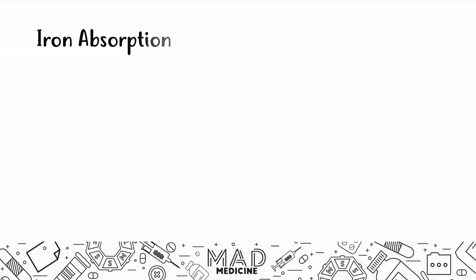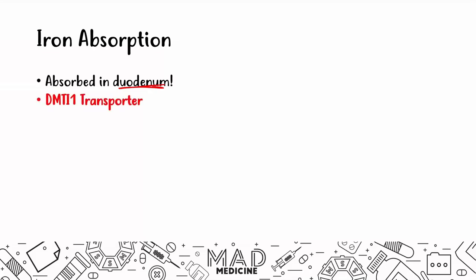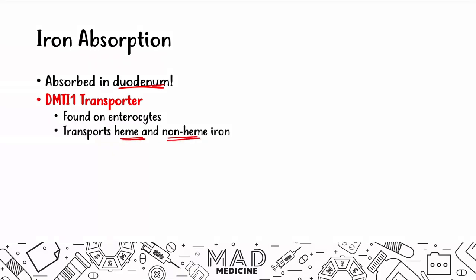Iron is absorbed in the gut and specifically in the duodenum — that's important to understand and ties back into your GI gastroenterology lectures. Iron gets absorbed in the duodenum via a transporter called the DMT-1 transporter, which is found on enterocytes. It transports both heme and non-heme iron, making it non-selective. Heme iron is more readily absorbed and easier for our body to absorb.